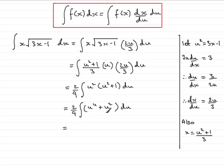And then we can integrate this, so we have 2 ninths integrating u to the 4, add 1 to the power, u to the 5 over 5 and divide by the new power. Here add 1 to the power, u to the 3 divided by the new power. And then we have plus c.